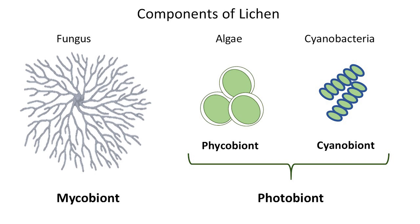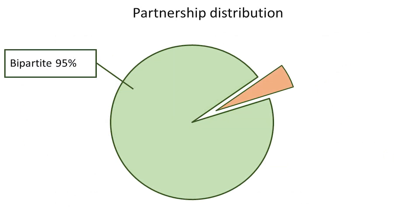This precise terminology highlights the distinct roles these partners play in the symbiotic relationship that characterizes lichen's unique and fascinating nature. About 95% of lichens are bipartite, which means that lichens consist of two components: a mycobiont and a single photosynthetic partner.